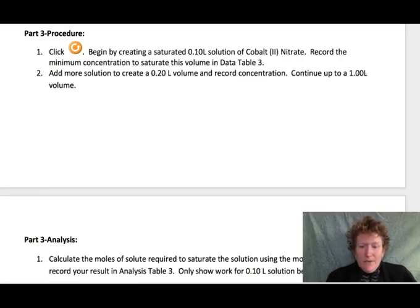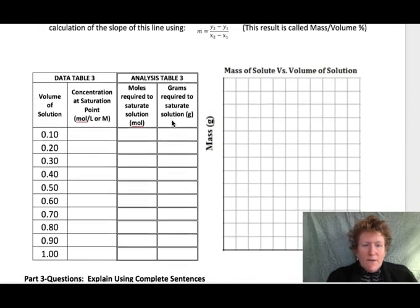Let's show the part three procedure just really quickly here. You want to click reset and create a saturated solution of 0.1 liters of cobalt nitrate. And then you're going to work your way up creating a saturated solution all the way up by tenths of a liter. You're going to fill out this table and eventually make a graph. So I'll show you just really quickly how to do that.